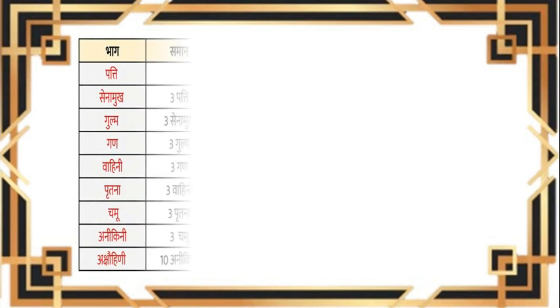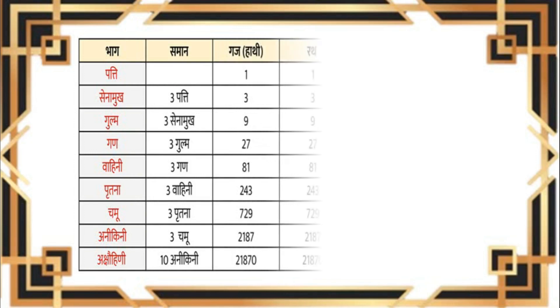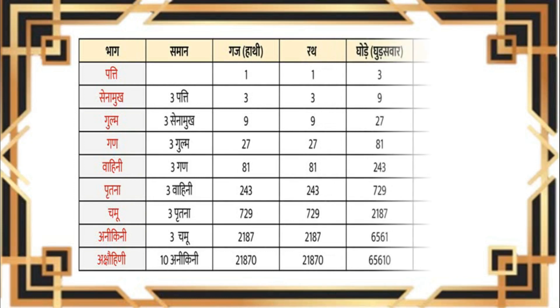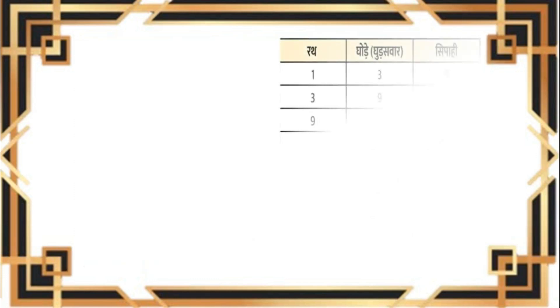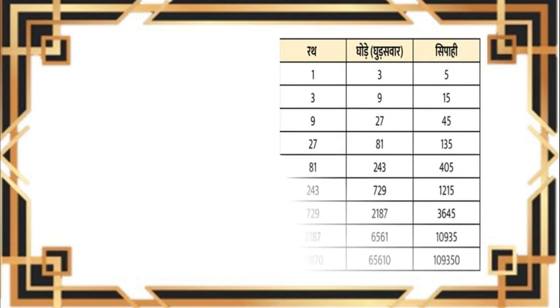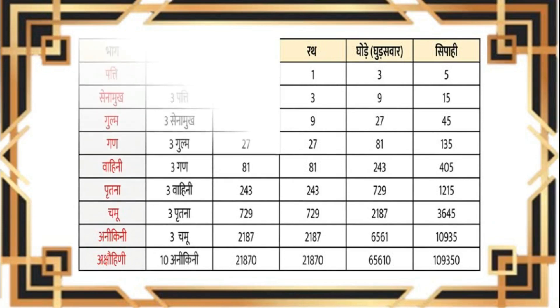श्लोक 19: एको रथो गजश्चैको नरा: पञ्च पदातय:, त्रयश्च तुरगास्तज्ज्ञै: पत्तिरित्यभिधीयते। श्लोक 20: पत्ती त्रिगुणिता तामाहु: सेनामुखं बुधा:, त्रीणि सेनामुखान्येको गुल्म इत्यभिधीयते। श्लोक 21: त्रयो गुल्मा गण: स्मृत:, तिस्रस्तु वाहिन्य: पृतनेति विचक्षणै:। श्लोक 22: चमूस्तु पृतनास्तिस्र:, तिस्रश्चम्वस्त्वनीकिनी, अनीकिनी दशगुणा प्राहुरक्षोहिणीं बुधा:।